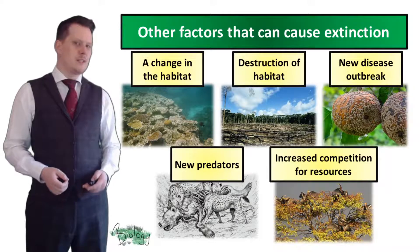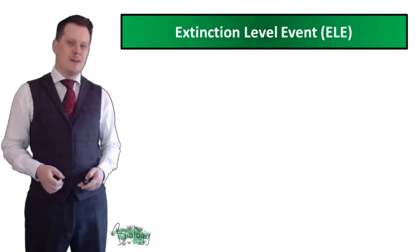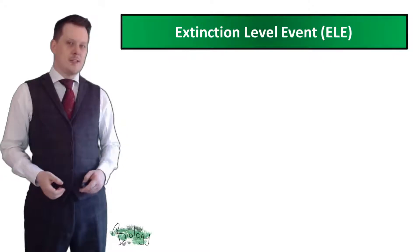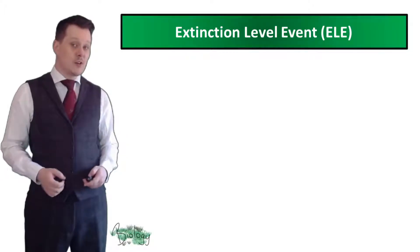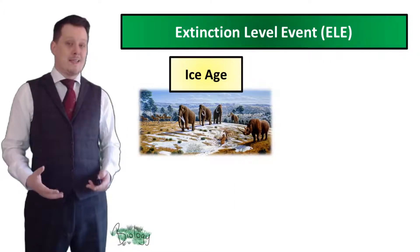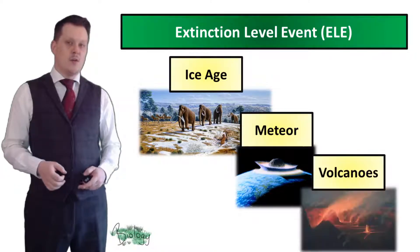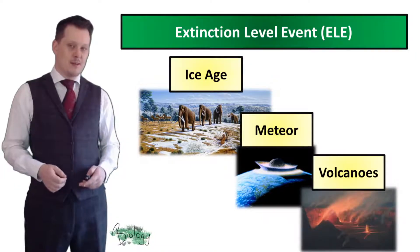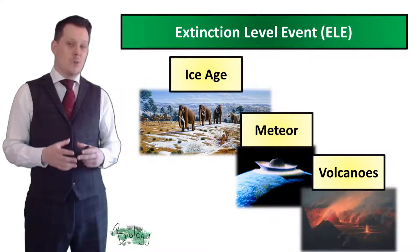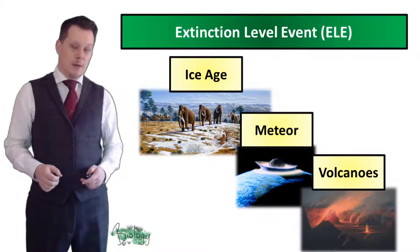Some other reasons a species could become extinct are extinction level events. These don't happen over a long period of time — they are catastrophic events such as an ice age, a meteor hitting the earth, or volcanoes erupting. Things that cause a huge loss of life and can wipe out species in a very short period of time.